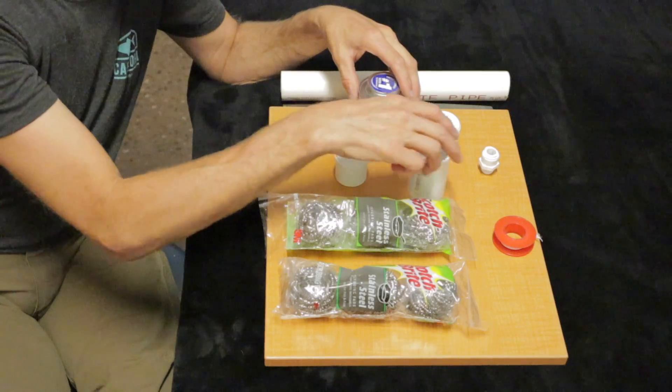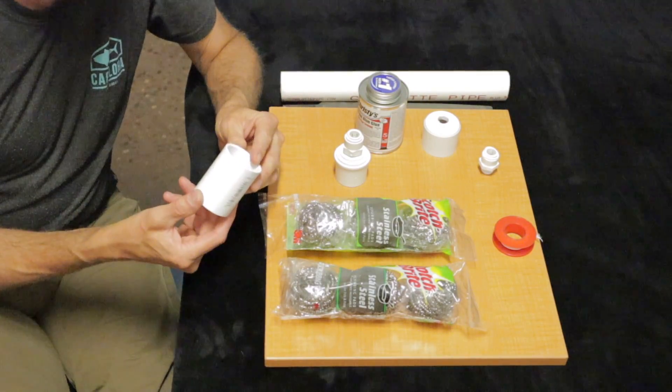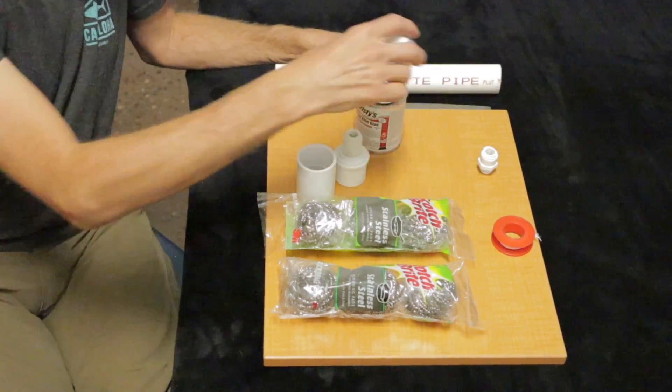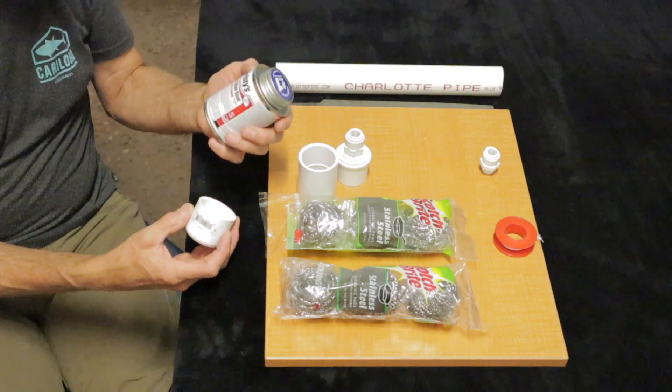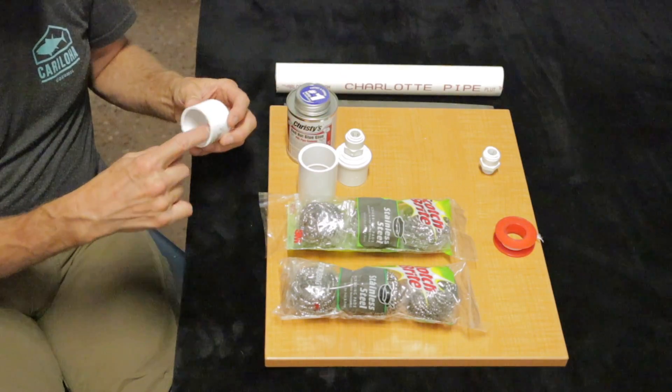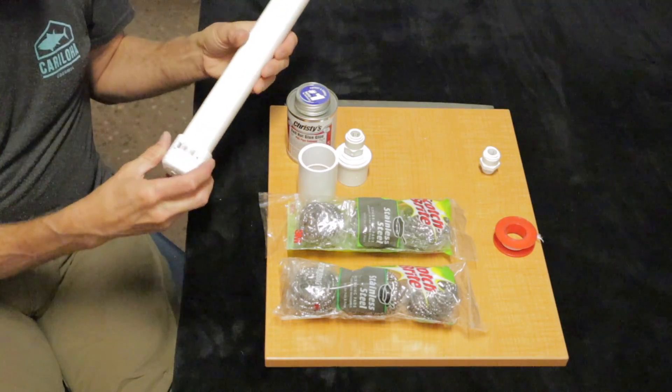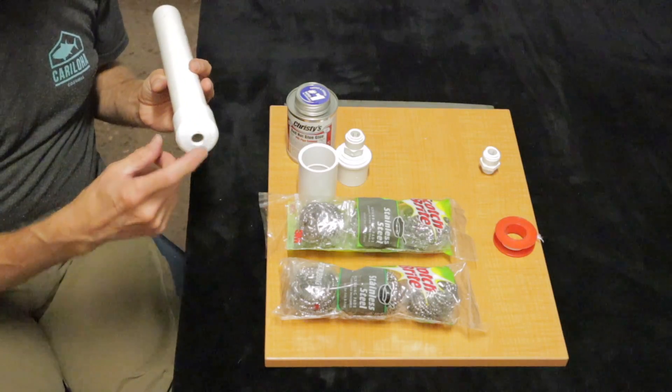And then the other piece that I have is just a coupler for inch and a quarter. So what you're going to do is you're going to take your PVC glue, you're going to put it on your cap, and the first thing you're going to do is glue your cap on. And so this is your nozzle end where the foam is going to come out.